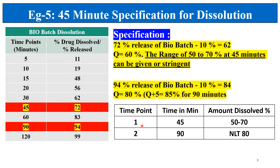The time points are given as 1 and 2: time in minutes 45 and 90, with the amount dissolved. A range is given at the first time point and the last time point value at the second. I have made another video on 2-point dissolution specification where you can get complete clarity.